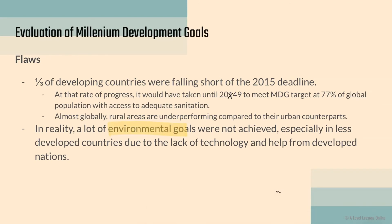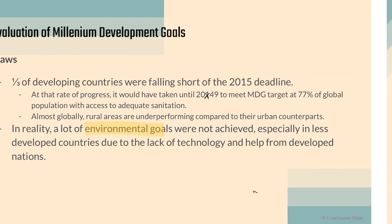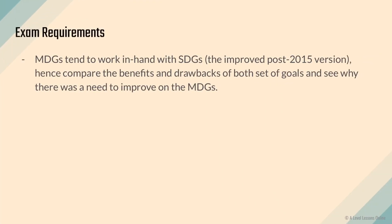In reality, a lot of the environmental goals were not achieved, especially in less developed countries, due to a lack of technology and support from developed nations. This is something the SDGs later sought to address — ensuring that developed nations, having already achieved the MDGs, would go on to help less developed countries that were still struggling.